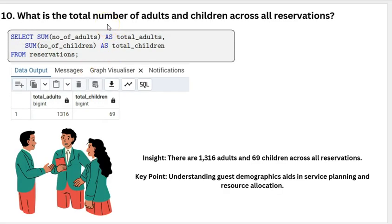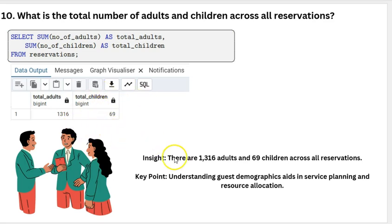What is the total number of adults and children across all reservations? Total adult reservations we have: 10,360, and total children reservations: 69. The key point here is that understanding guest demographics helps in service planning and resource allocation.